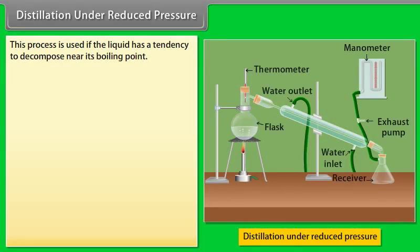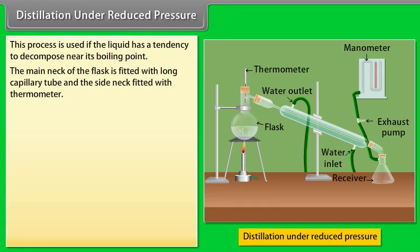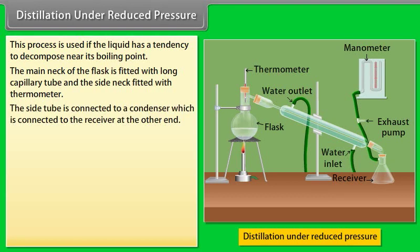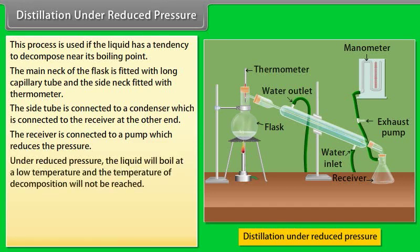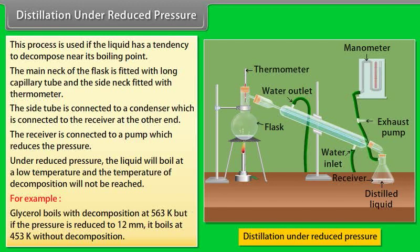Distillation under reduced pressure: This process is used if the liquid has a tendency to decompose near its boiling point. The main neck of the flask is fitted with a long capillary tube and the side neck is fitted with a thermometer. The side tube is connected to a condenser, which is connected to a receiver. The receiver is connected to a pump which reduces the pressure. Under reduced pressure, the liquid boils at a lower temperature. For example, glycerol boils with decomposition at 563 K, but if the pressure is reduced to 12 mm, it boils at 453 K without decomposition.